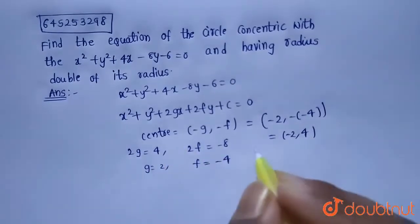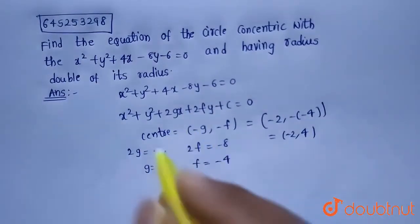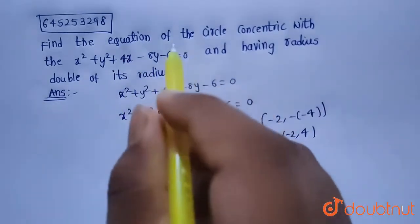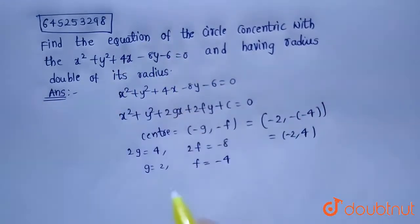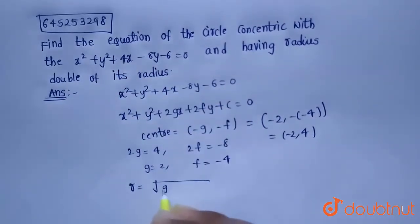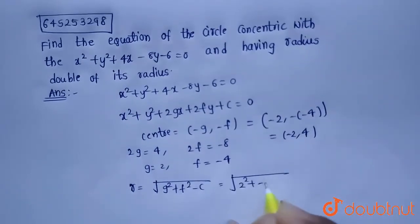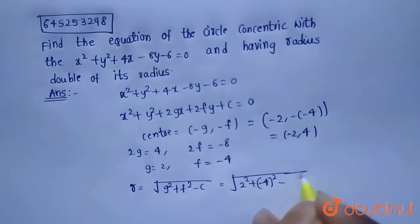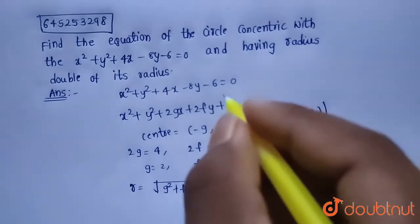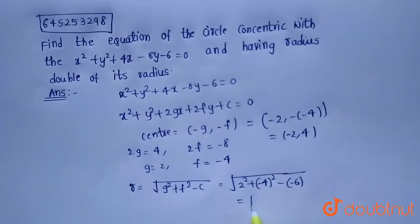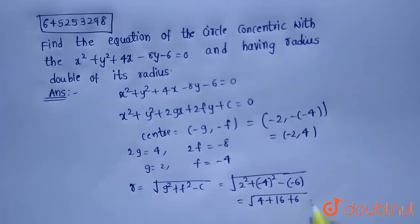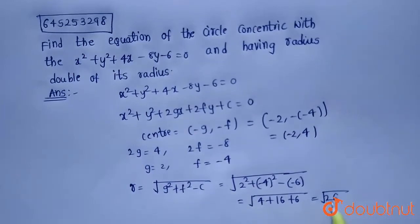We have the center. Now we need the radius. The required circle has radius double that of the given circle, so let's find the given circle's radius. The radius formula is √(g² + f² − c). Substituting: √(2² + (−4)² − (−6)) = √(4 + 16 + 6) = √26. So the radius of the given circle is √26.